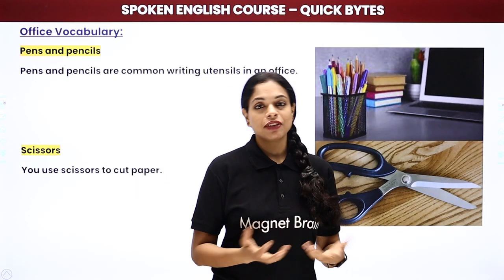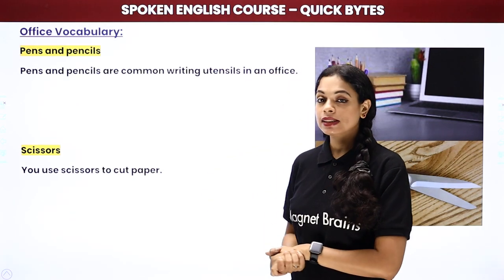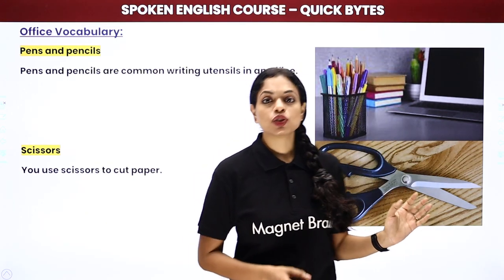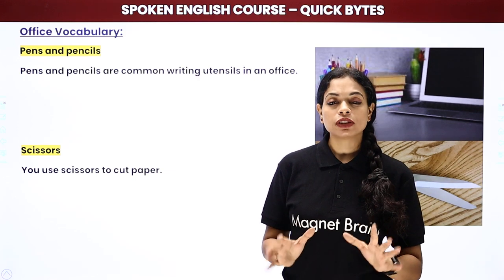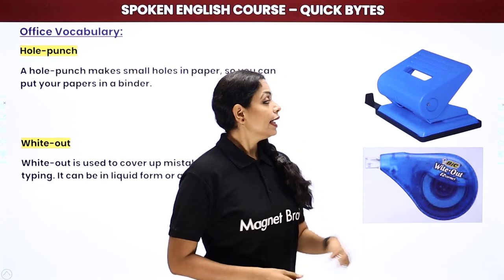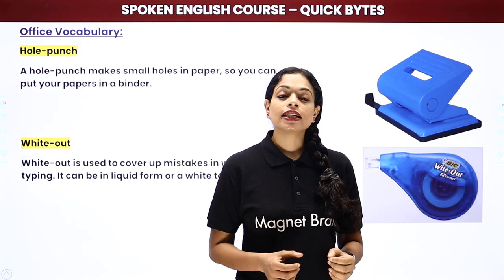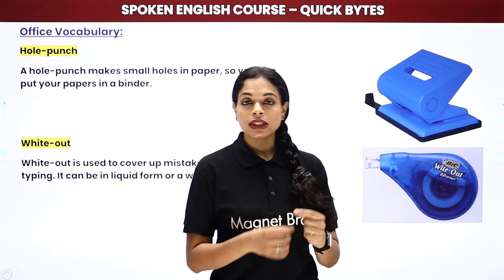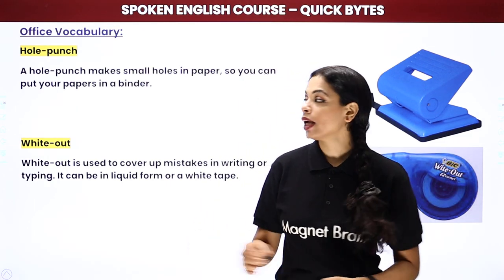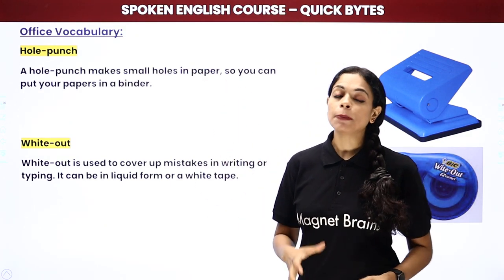Then we have pens and pencils — we know what these are. They are writing utensils. Then we have scissors — scissors means kainchi — a very important item in any office, used to cut paper. Then you have a hole punch. You use a hole punch when you want to file papers. To file papers, you first need to make holes so you can thread them into a file or put them through the file pins. A hole punch makes small holes in paper so you can keep papers in a binder.